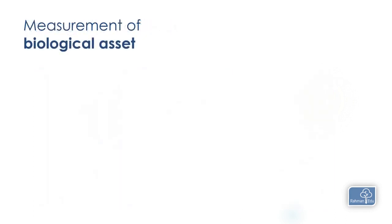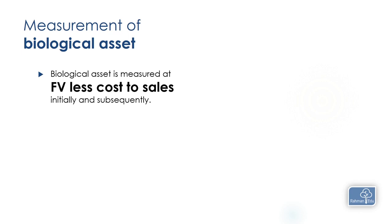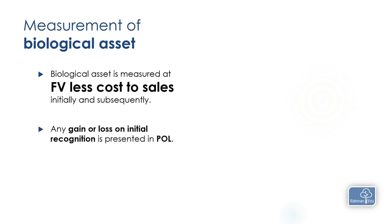Biological assets are measured at fair value less cost to sell. You obtain the market price — that is fair value — and deduct selling costs such as transportation and commission to get fair value less cost to sell. Any gain or loss on initial recognition is presented in profit or loss. Similarly, any gain or loss from subsequent changes in fair value less cost to sell is also presented in profit or loss.